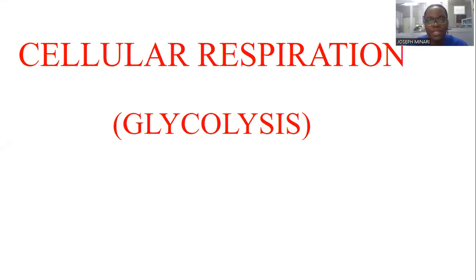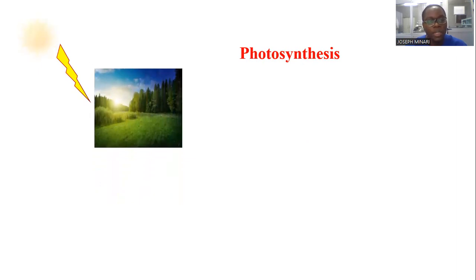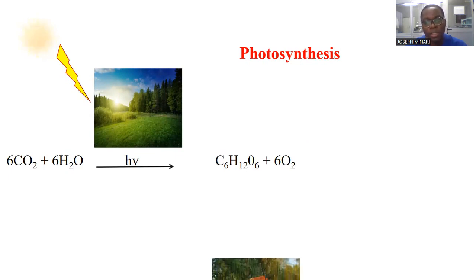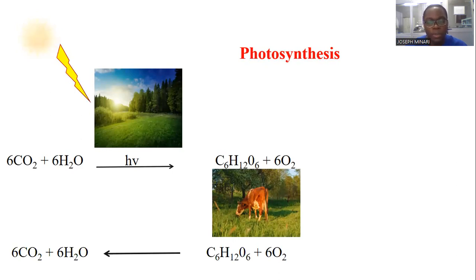Welcome to this YouTube channel. Today we want to talk about cellular respiration, with emphasis on glycolysis. Let's start from photosynthesis — the process whereby energy from the sun is utilized by plants to convert carbon dioxide and water to sugar and oxygen. When animals come around to feed on these plants, they convert this sugar plus oxygen, producing carbon dioxide and water. This is referred to as cellular respiration, which leads to the production of energy.